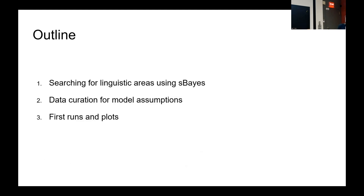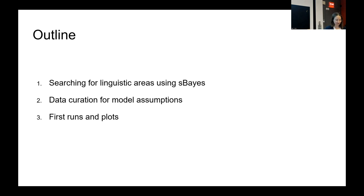In this talk, I want to first motivate why we have selected a specific algorithm that was designed to detect contact areas in local case studies for a global analysis with the possibility to do so with the large scope of GramBank. Then how we have needed to curate the GramBank data so that it actually ends up aligning as best as possible with the model assumptions that S-BASE takes. And in the end, I can provide some first insights from our first runs of S-BASE with GramBank on a global scale.